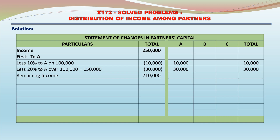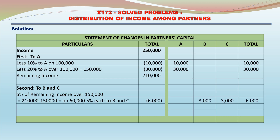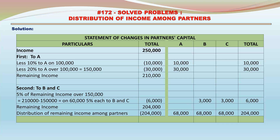Remaining Income: Net Income 250,000 less 10,000 less 30,000 is equal to 210,000. Second, to B and C: 5% of remaining income over 150,000. That is equal to 210,000 minus 150,000, equal to 60,000 — 5% each to B and C: 3,000 each allocated to B and C. Remaining Income: 210,000 minus 6,000 equals 204,000.